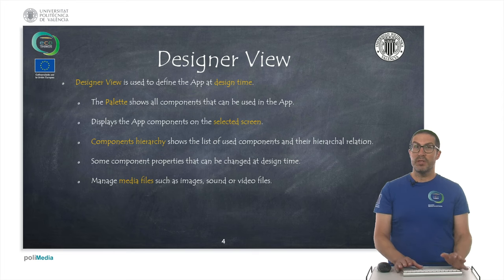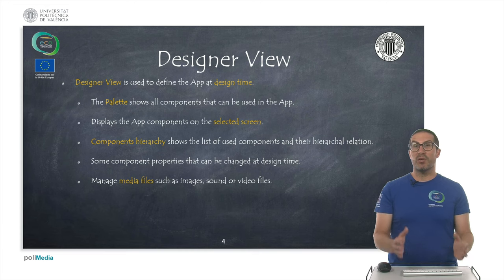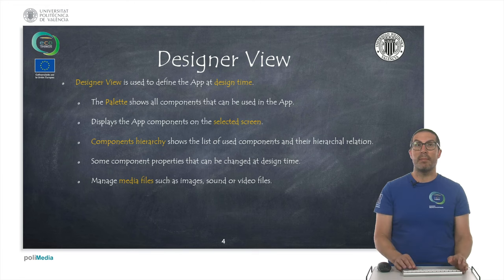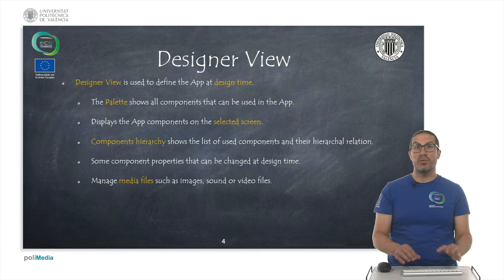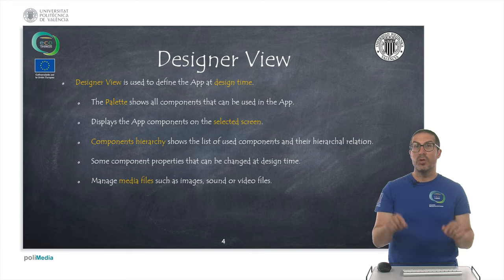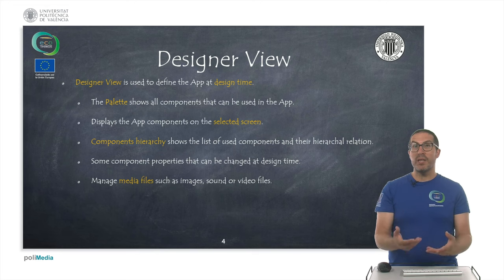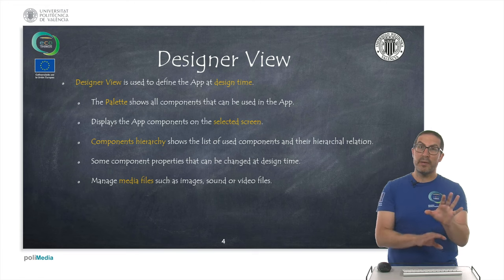APP Inventor has two views: the designer and the block view. In the designer view is where we define the aspect of our app at design time, meaning when we are developing the app. It contains a palette in which we have all the components that can be used in the app and can be dragged and dropped. It also displays the screen you want to work on, and all the list of components being used in that screen along with their hierarchical relationship — their parents and children.